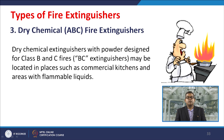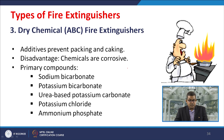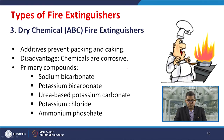Additives may be used to prevent packing and caking of the powder — sometimes the powder may form lumps, which is why some fire extinguishers have expiry dates. A disadvantage of dry chemical extinguishers is that the chemicals used are corrosive in nature. The primary compounds used include sodium bicarbonate, potassium bicarbonate, urea-based potassium carbonate, potassium chloride, and ammonium phosphates.